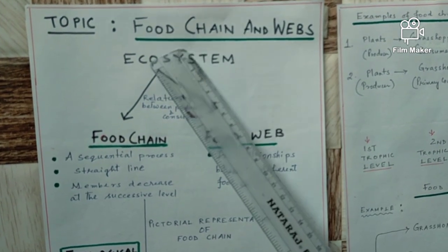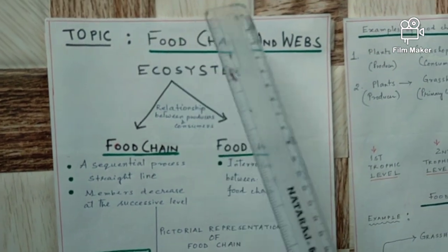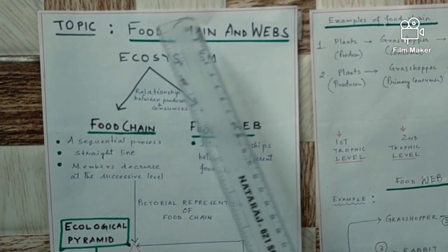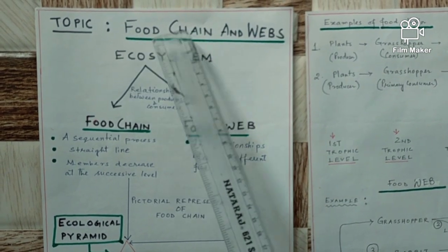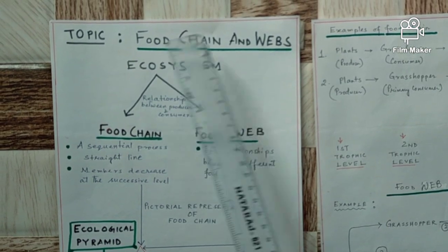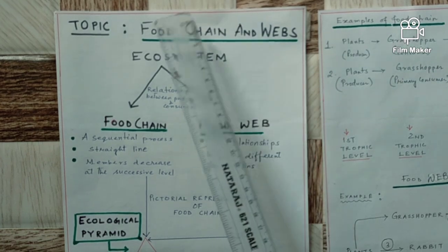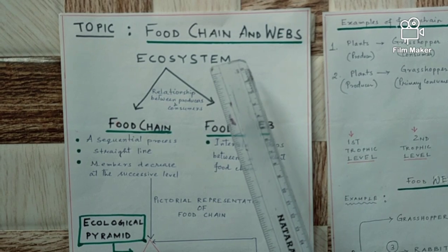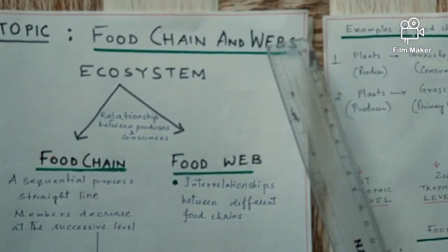What is food chain? The process where the organisms are eating each other — the process of being eaten and eating others — is known as food chain. And food wave: in a community there are many food chains existing, so there will be interrelationship between the food chains. That interrelationship between food chains is termed as food wave.